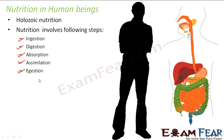We will now talk about the entire system in human beings which takes care of this nutrition part and how it functions. The entire structure which takes care of these five steps is known as the alimentary canal, or sometimes it is also known as the digestive tract. We will talk about this alimentary canal in detail — what are the parts, and which part performs which function.